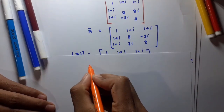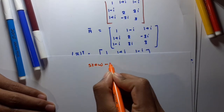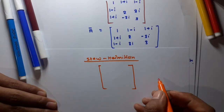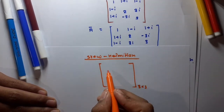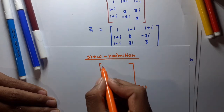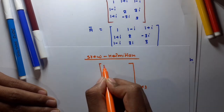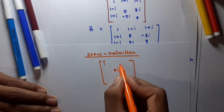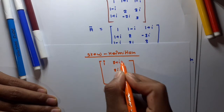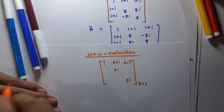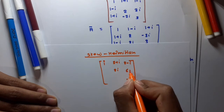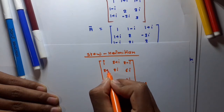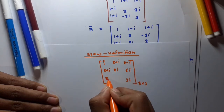Now let's see how to construct a skew-Hermitian matrix. The most important point is that diagonal entries must be purely imaginary. For example, write diagonal entries such as i, 2i, and 6i — any imaginary numbers you choose.